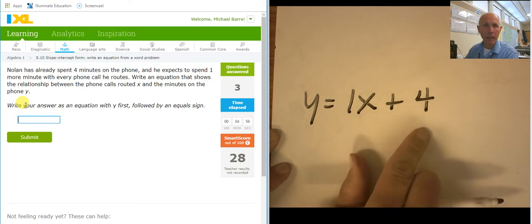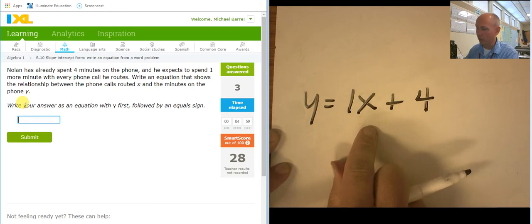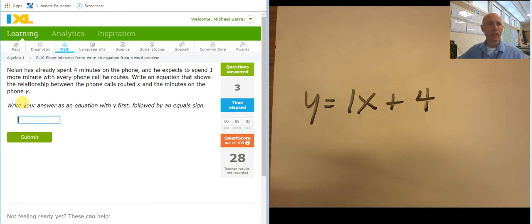So, four minutes already, and then for every phone call, it takes an extra minute. So, zero phone calls, four minutes. One phone call, five minutes. So, y equals, I'm going to drop off that one. Just go with x plus 4.